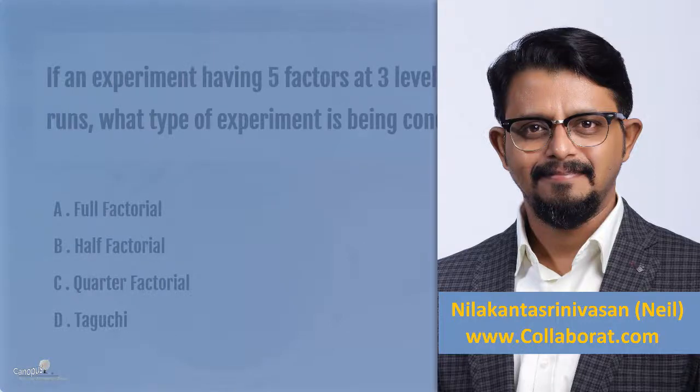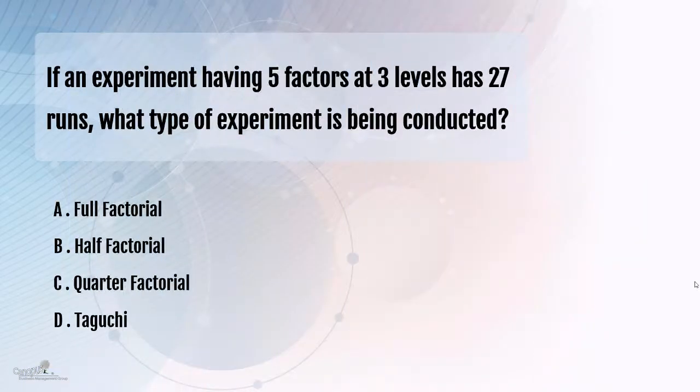Here's another interesting question. If an experiment which has five factors at three levels each has 27 runs, what type of experiment is being conducted? The options we have are full factorial, half factorial, quarter factorial, and Taguchi design.